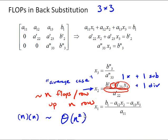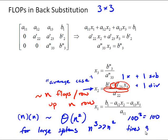And note where this becomes significant, these operation counts, is for large systems that are going to take significant computational time. And for large systems, n cubed is significantly greater than n squared. For example, 100 cubed is 100 times greater than 100 squared.